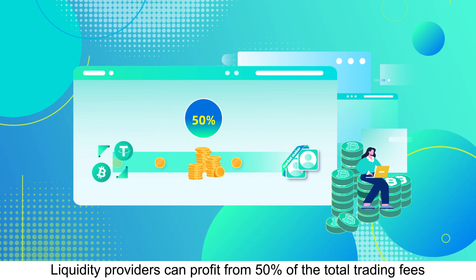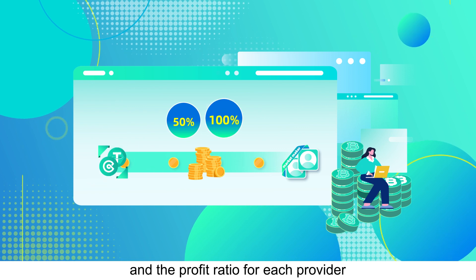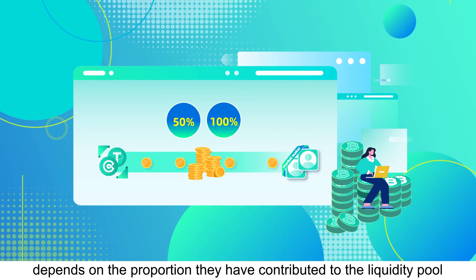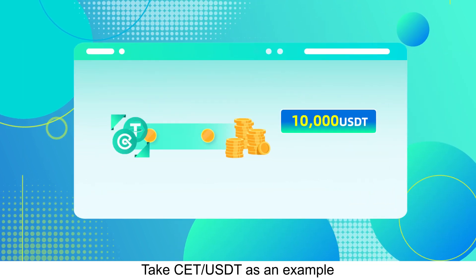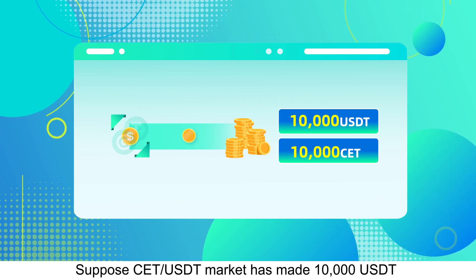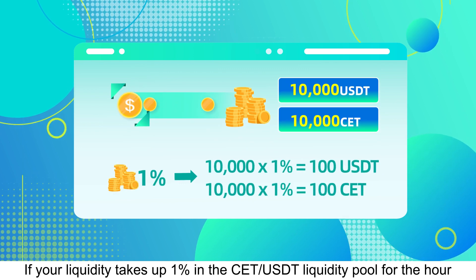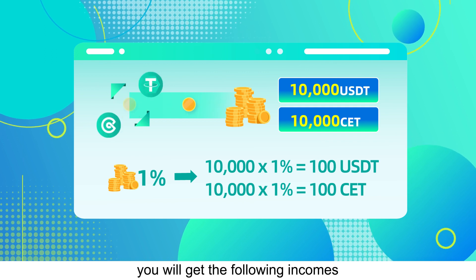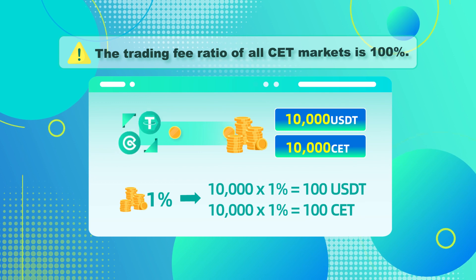How to profit via AMM: liquidity providers can profit from 50% of the total trading fees in their AMM markets, and the profit ratio for each provider depends on the proportion they have contributed to the liquidity pool. For example, suppose the CET/USDT market has made 10,000 USDT in trading fees in an hour. If your liquidity takes up 1% in the CET/USDT liquidity pool for that hour, your income is calculated accordingly. Note: the trading fee ratio of all CET markets is 100%.